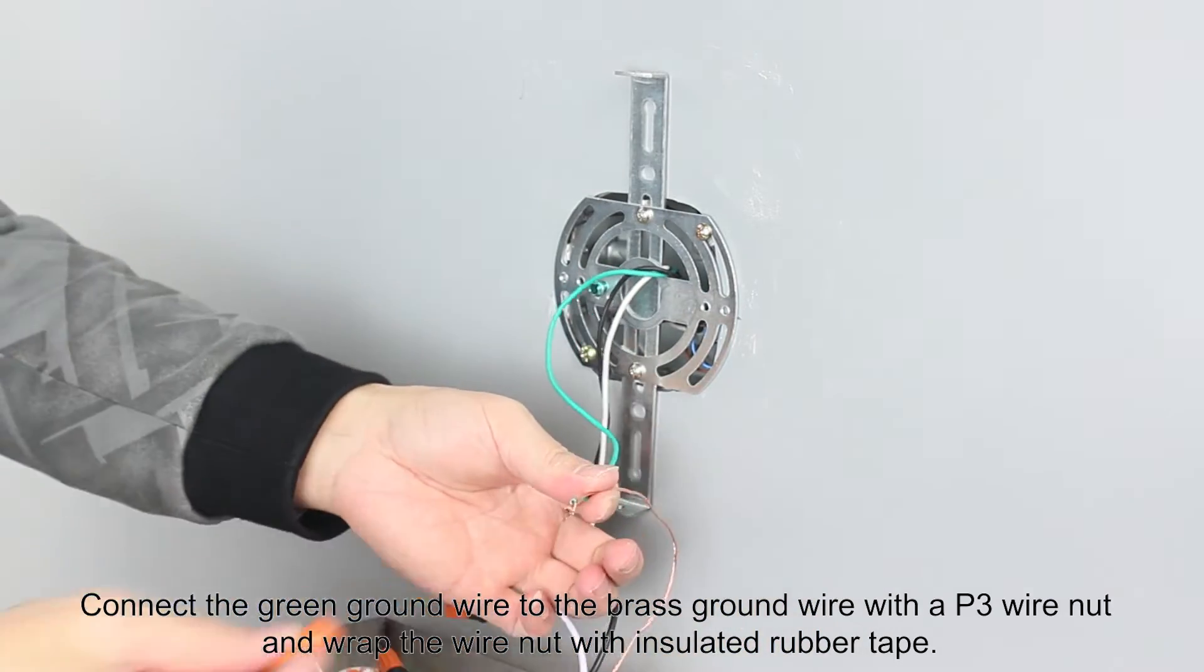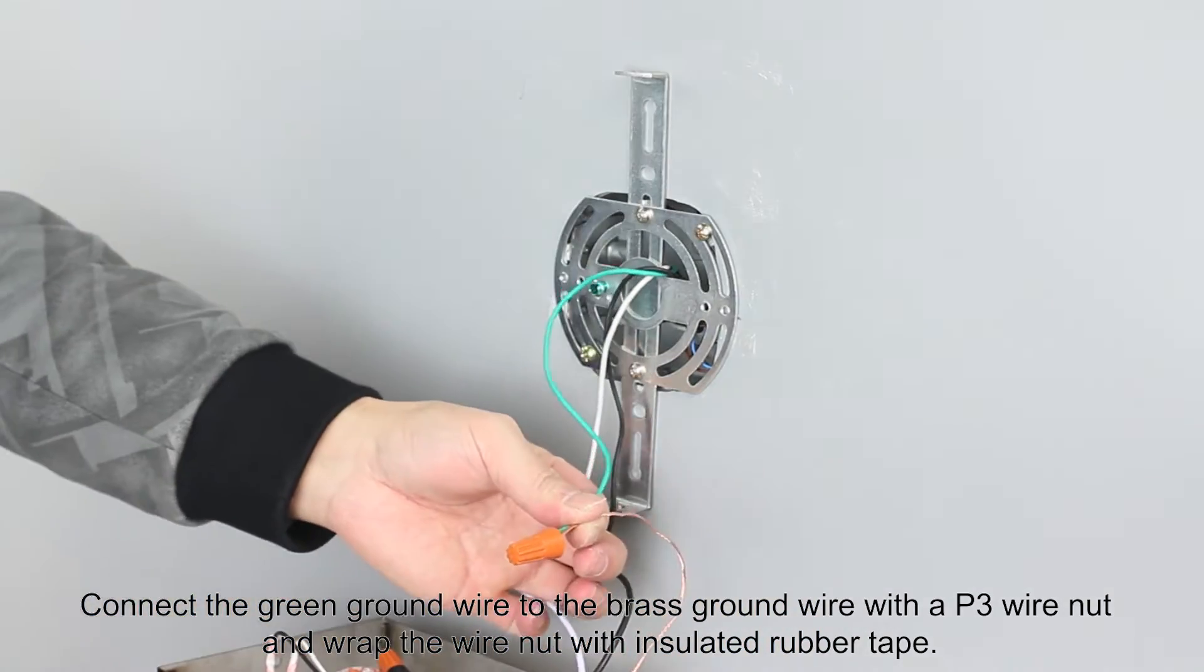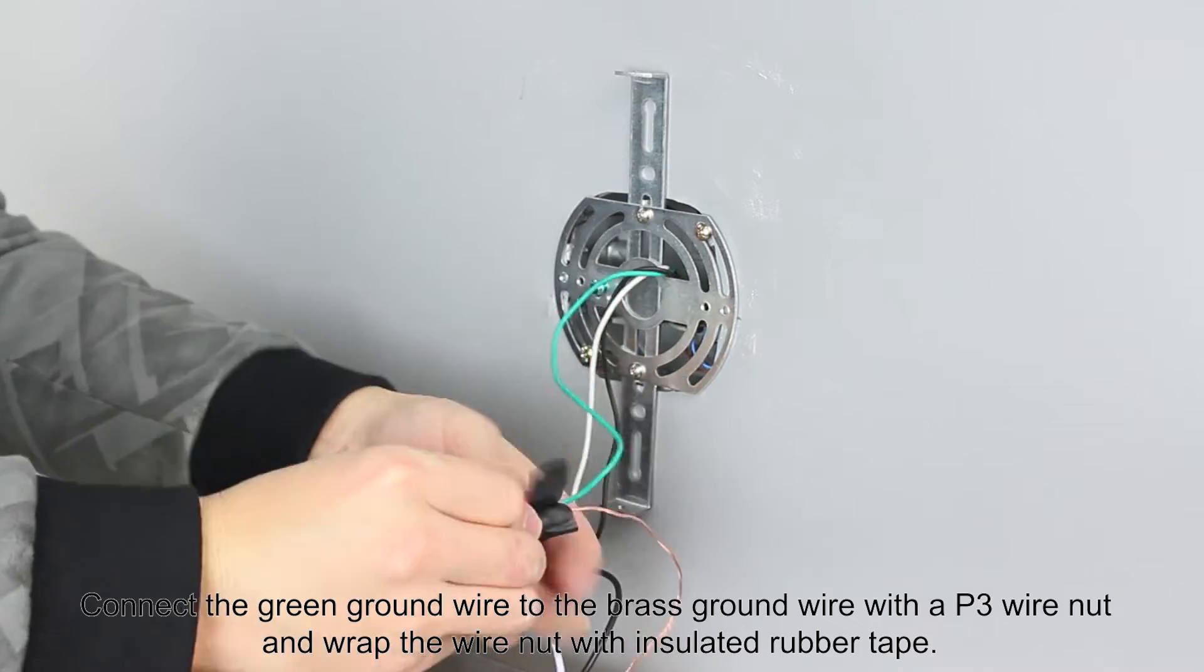Connect the green ground wire to the brass ground wire with a P3 wire nut and wrap the wire nut with insulated rubber tape.